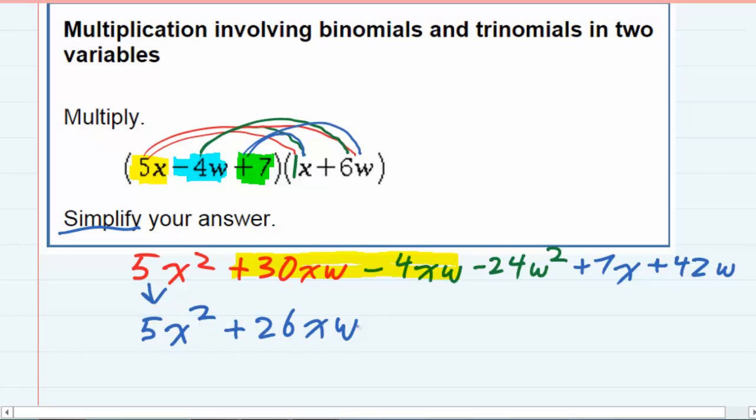The next term is w squared, and I only have one of those, so it's -24w squared. There's only one x term, 7x, and one w term, 42w.